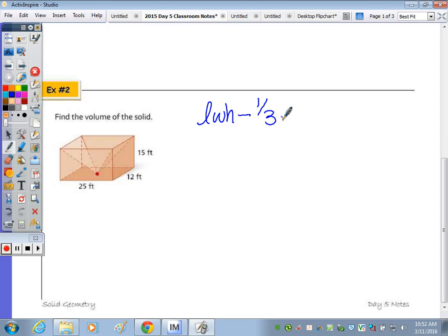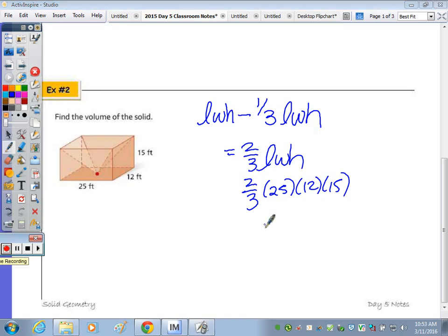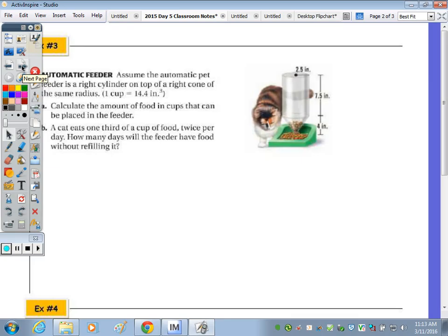So we have length times width times height, minus one third capital B, which is length times width, and then the height is the same. So instead of doing length times width times height minus a third length times width times height, you could actually do two thirds of your length times width times height. So two thirds of 25 times 12 times 15, we get 3,000 cubic feet.